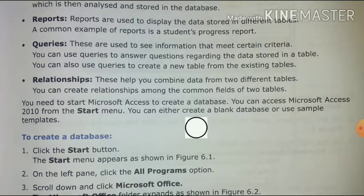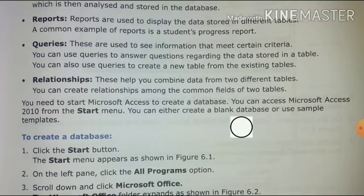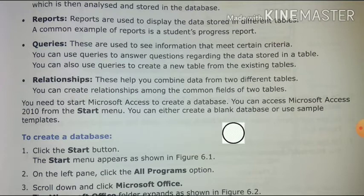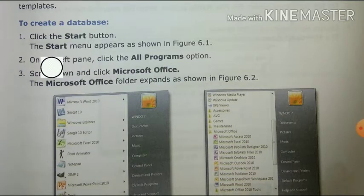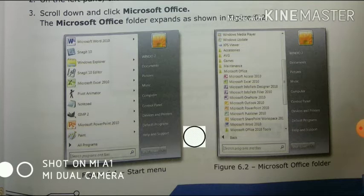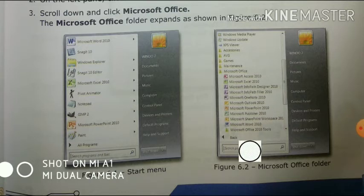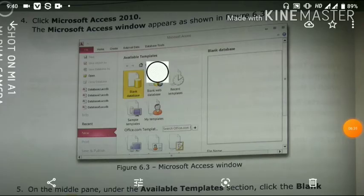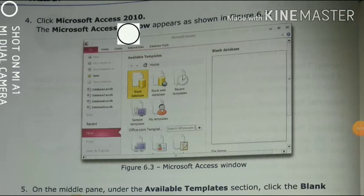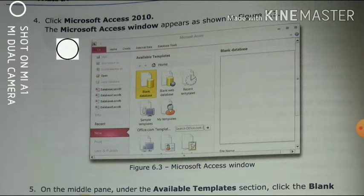To create a database in MS Access, you can access Microsoft Access from the Start menu. You can either create a blank database or use a sample template. First, click on the Start button, then click on Microsoft Office 2010, and then click on Microsoft Access 2010. After selecting Microsoft Access, the Microsoft Access window appears. Our Microsoft Access window will open.